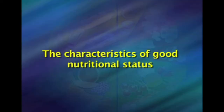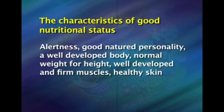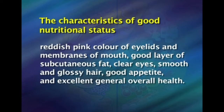There are some characteristics to identify whether a person has good or poor nutritional status. The characteristics of good nutritional status are: alertness, good-natured personality, a well-developed body, normal weight for height, well-developed and firm muscles, healthy skin, pink color of eyelids, good subcutaneous fat, clear eyes, smooth and glossy hair, and good appetite.